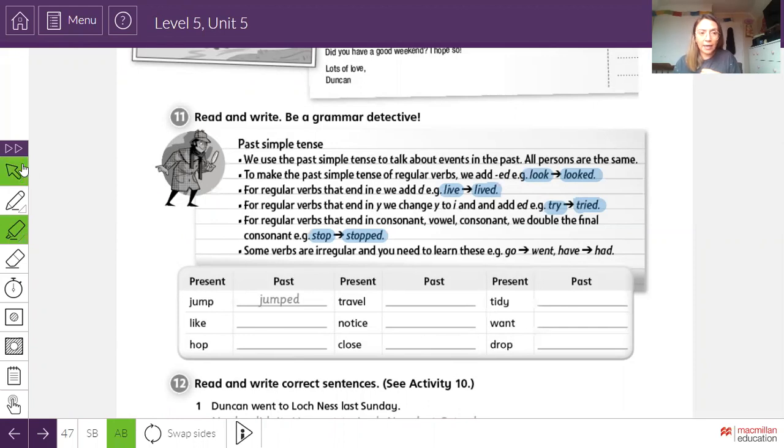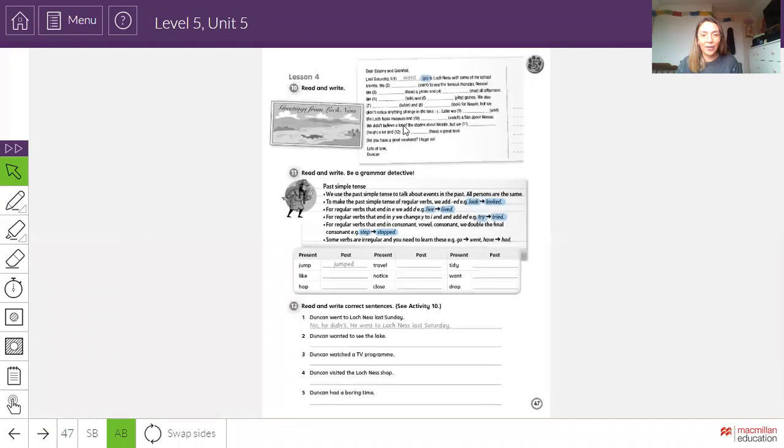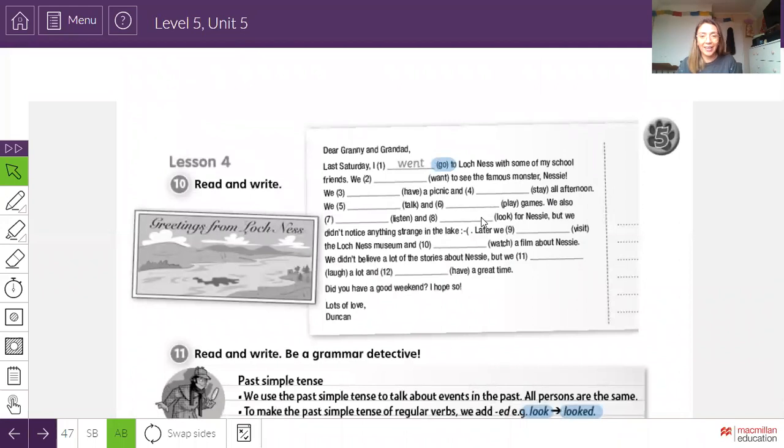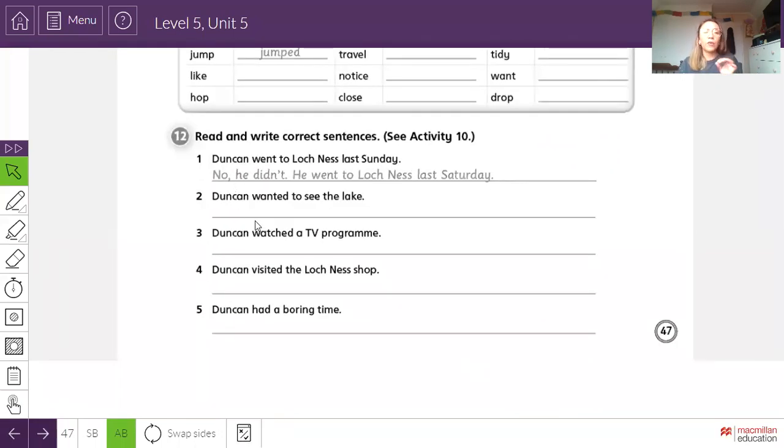Entonces vamos a la última actividad. Activity number 12 says, read and write correct sentences. See activity 10. In this activity, you are going to use the letter written by Duncan. La carta escrita por Duncan a sus grandparents. You are going to use this letter to complete your activity number 12. Well, you have to read the sentences and write true or correct sentences.